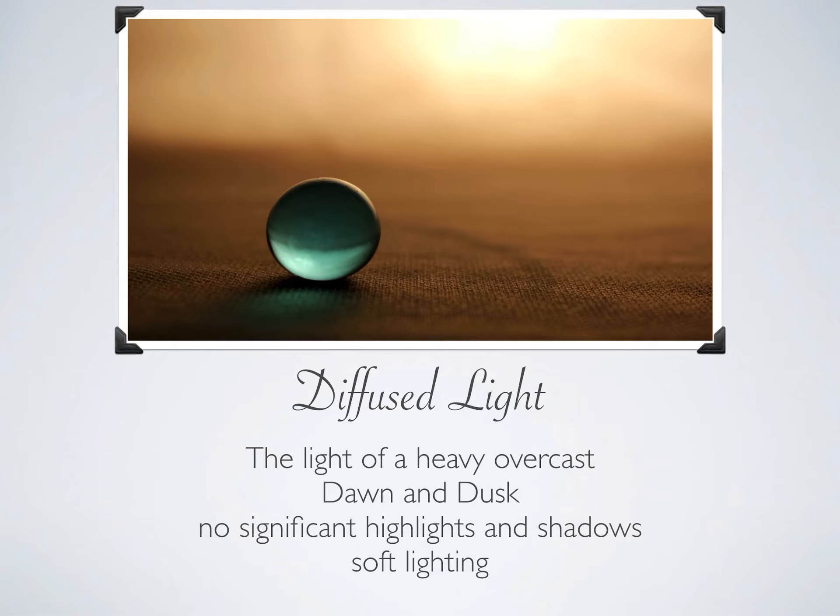Diffused light is the light of a heavy overcast, dawn or dusk. It is anything like if you have a light and there's a lampshade covering it, making it softer — that's a diffused light. There are no significant highlights or shadows, and it's very, very soft. So that's diffused light. If we have some overcast days, which happens very often here in Erie, that would be a good example of diffused light — very soft.